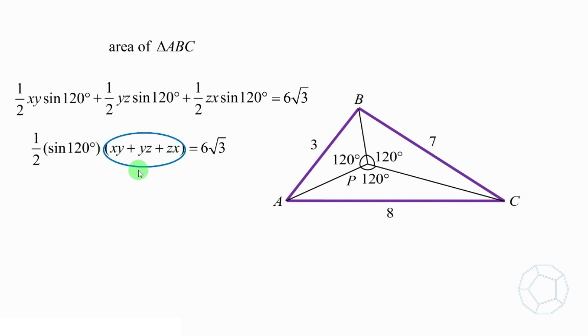That's exactly what we are looking for. Because sine 120 degrees is equal to square root 3 over 2, cancel out the square root 3 on both sides, we get the answer. xy plus yz plus zx is equal to 24.